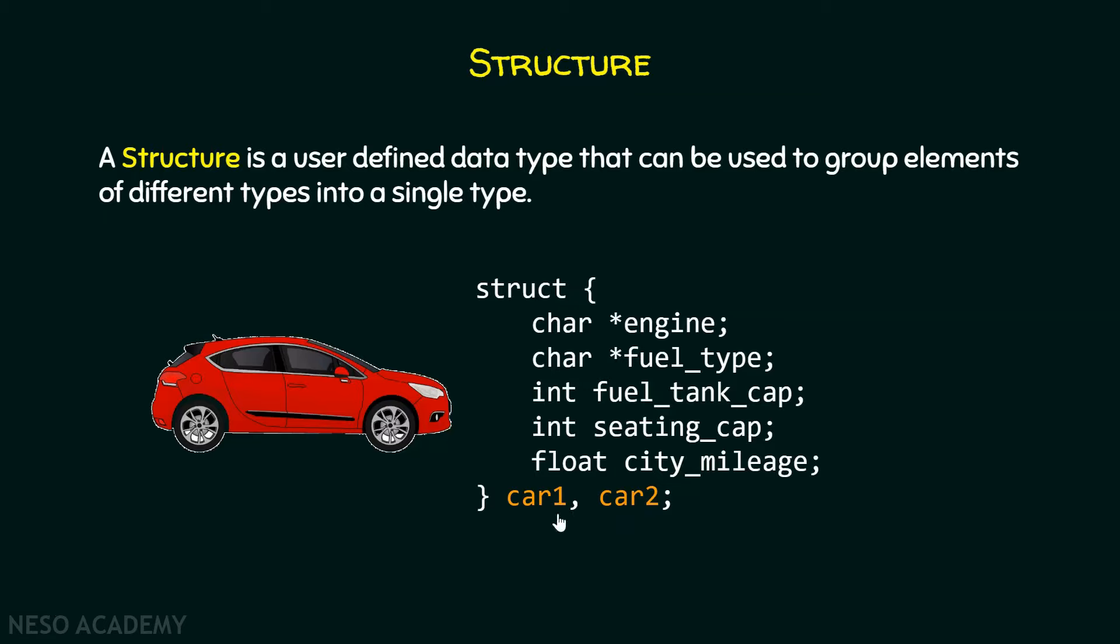So, we have car1 and car2 and within these we can say that these are the different properties of the particular car. Like engine, fuel type, fuel tank capacity, seating capacity, city mileage. These are all the properties and they are actually grouped together into one type.